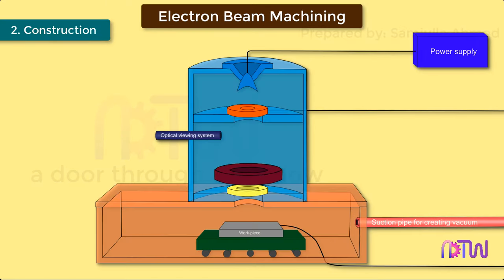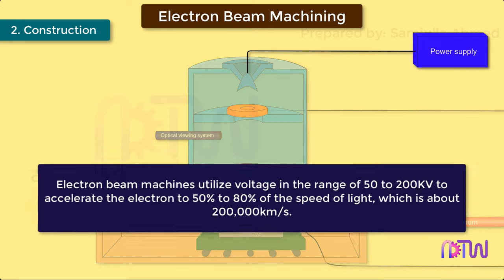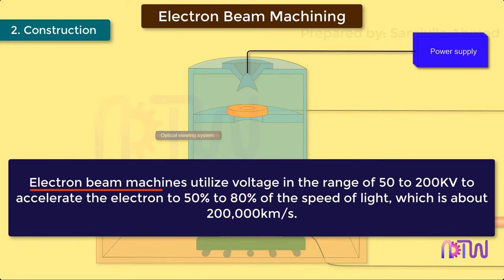Construction: Construction of electron beam equipment is built similar to electron beam welding machines. Power Supply: Electron beam machines utilize voltage in the range of 50 to 200 kV to accelerate the electron to 50% to 80% of the speed of light, which is about 200,000 km per second.